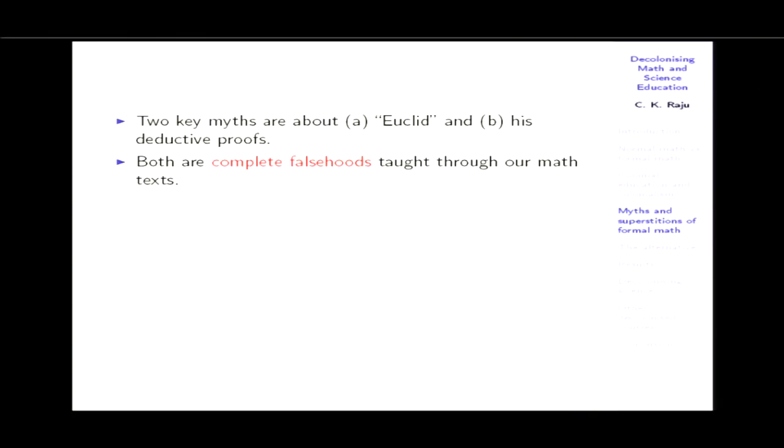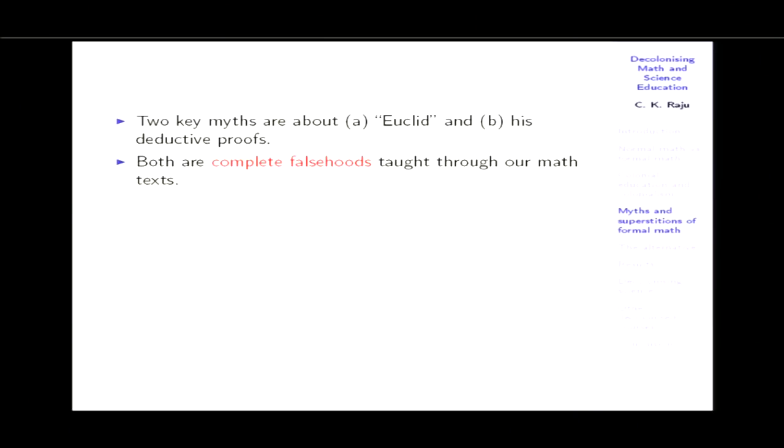Formal math originates with the church; it is accompanied by myths and superstitions. The two key myths: first, that there was a Euclid who was the white father of geometry; second, that he gave deductive proofs. Both are complete falsehoods, yet they are taught in our math texts. In India, the 9th standard math text teaches that Euclid and the Greeks did something special by way of deductive reasoning, and we must imitate it. If you ask for evidence for Euclid, the answer from national bodies is: we go by a committee, no evidence needed.